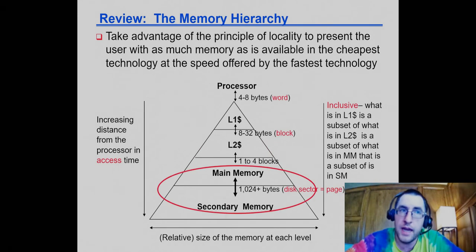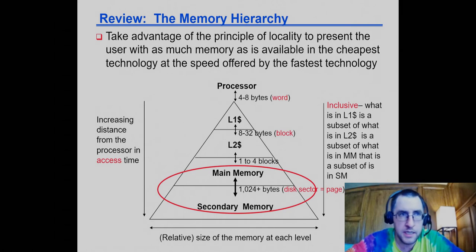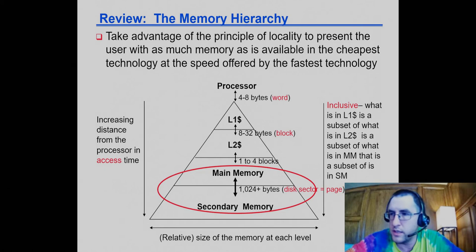Virtual memory is how we bridge the gap in our storage hierarchy between main memory — what we think of as physical memory, typically DRAM DDR chips — and secondary memory, sometimes called secondary storage. Historically that has been spinning disks, hard disk drives with spinning platters.